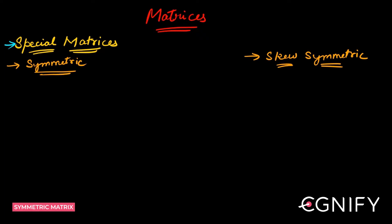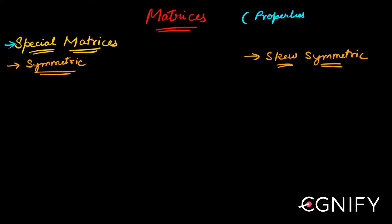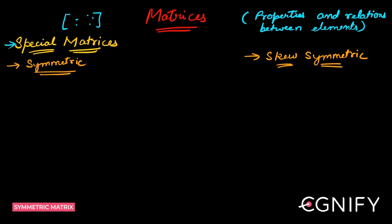The only thing is, in the previous classification we studied matrices based on the arrangement of elements — the way elements were arranged, what the order was, which elements are zero, which are non-zero, and things like that. But here it's slightly different.